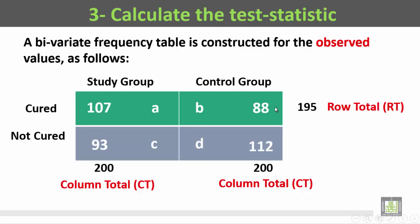The total of the first row is 107 plus 88, that's 195. This is the row total for the cured patients. While the row total for the second row is 205.